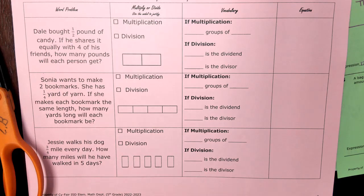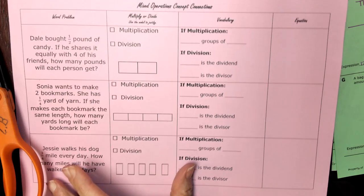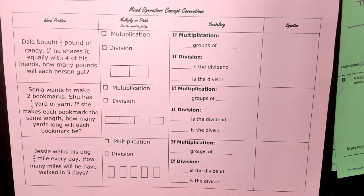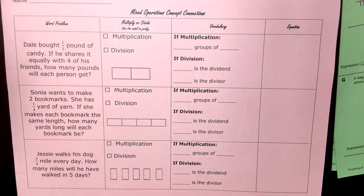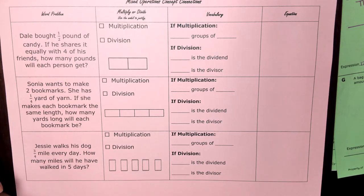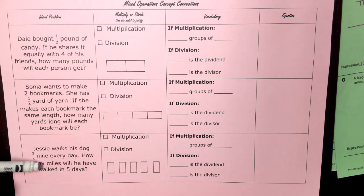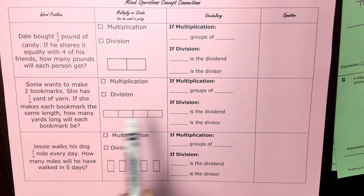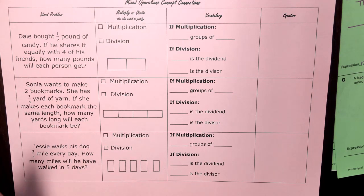After you've listened to the number talk called 'Making Connections,' we are going to be looking at some mixed operation concept connection questions. We're just going to walk through these together. What I'd like you to do first is read the three stories with me, and then pause. After you've read the three stories, go through and try to work through all three by yourself with a pencil.